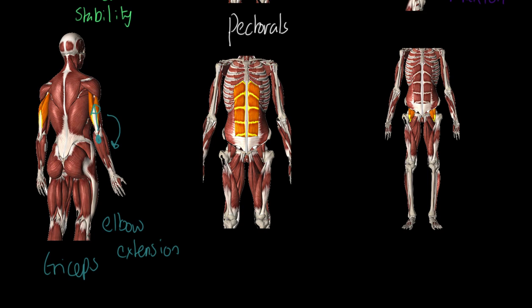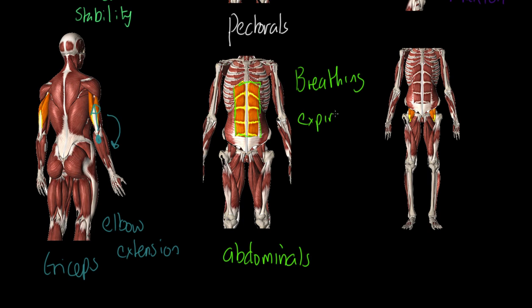These are our abdominals. Just be aware that abdominals is a collective term — we are specifically looking at the rectus abdominis. This muscle is a breathing muscle, involved in expiration, or breathing out, during exercise. The other thing it does is when it contracts and shortens, it produces a crunching action — we can call that flexion of the spine, bringing your body into that crouch position.